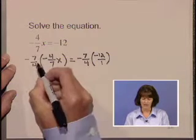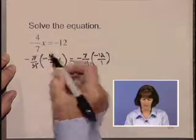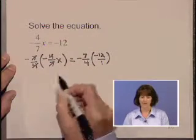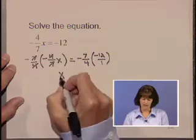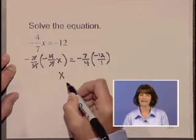Multiplying on the left, everything cancels. Fours are gone, sevens are gone, and a negative times a negative is positive, leaving us with a positive 1x on the left.